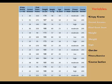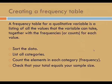Let's discuss some options for organizing categorical data. A great place to start is with a frequency table. A frequency table for a qualitative variable is a listing of all the values that the variable can take together with the frequencies, or counts, for each value.